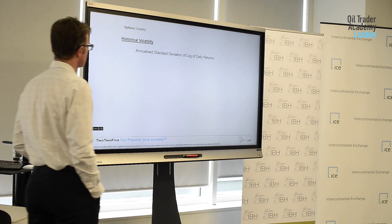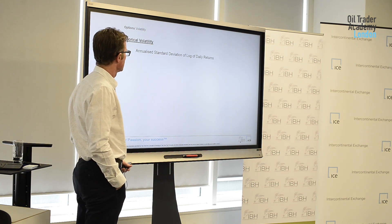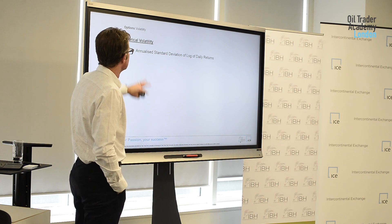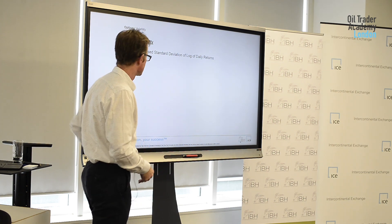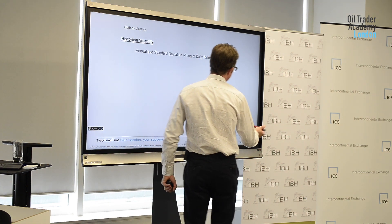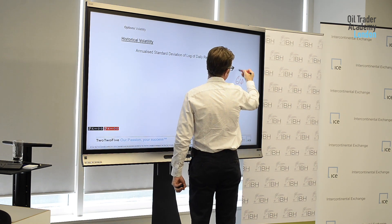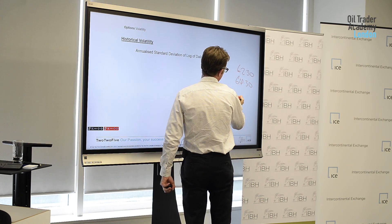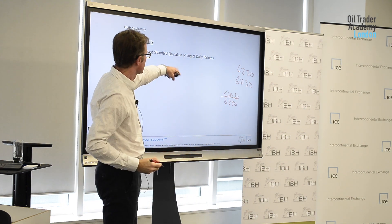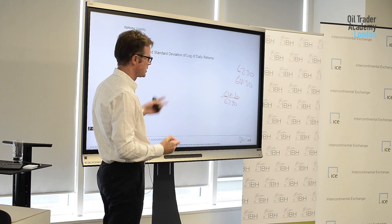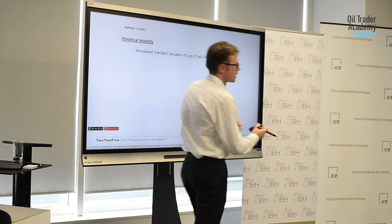There are two types of volatility, or two ways of looking at volatility. If we look historically, it's just a formula we can get from Excel. It's the annualized standard deviation of log of daily returns. All you do is look at yesterday's settlement price and the day before's settlement price, look at the ratio of them, divide the second into the first, take the log of it, look at it statistically over a period of time, and annualize it. You just do that over and over again going back in time.